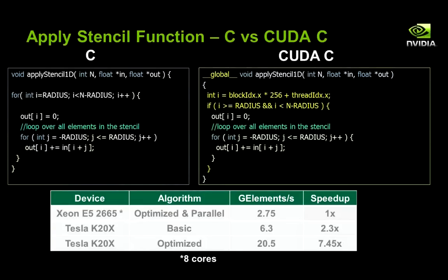On the right we can see the CUDA C code. The first change that we need to make is to add the __global__ keyword. The __global__ keyword signifies that this code will be compiled for the GPU. One main difference between the CUDA version and the C version is that the CUDA version will call this function once for every iteration of that loop. Since this function is now going to be called many times, potentially in parallel, we need to be able to compute what index we are working on. We use the formula shown here to compute the unique index for each parallel thread, and then check the bounds that we would be checking on the loop normally. The rest of the code is unchanged.